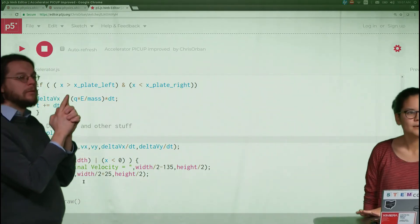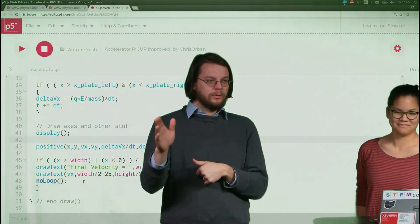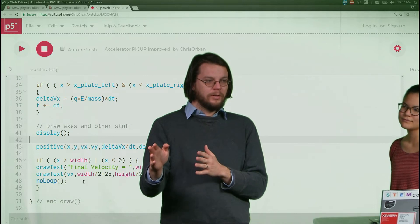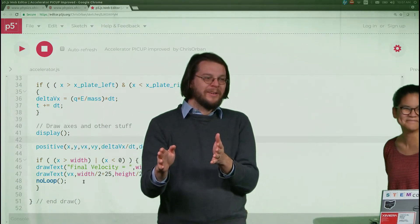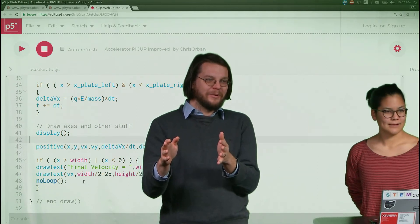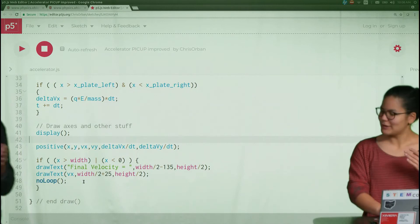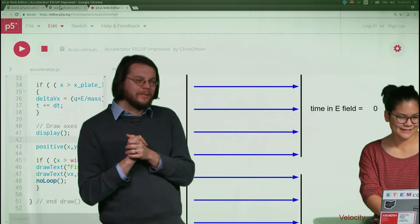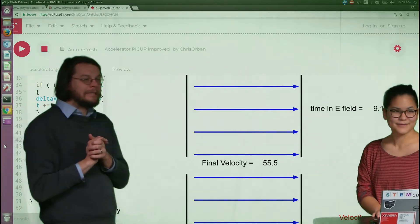If x is greater than x plate left, okay, if there's a plate over here, if the x position is greater than that plate then that's true. But then there's a plate over... if the... okay, should I bring up the picture? Yeah, let's bring up the picture. Okay, so if x is greater than x plate left and x is less than x plate right, then you use this and you're changing the velocity.